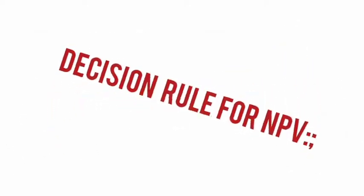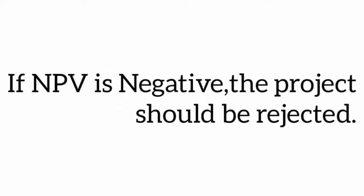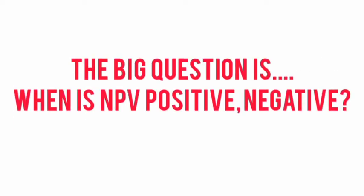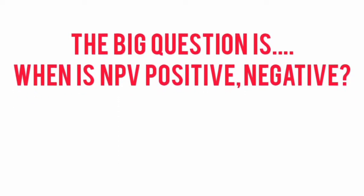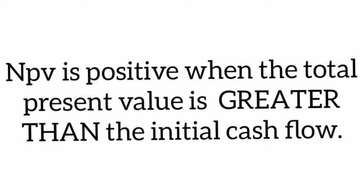The decision rule for NPV: if NPV is positive, the project should be accepted. If NPV is negative, the project should be rejected. If NPV is zero, you may accept or reject it. Now when is NPV positive and when is NPV negative?